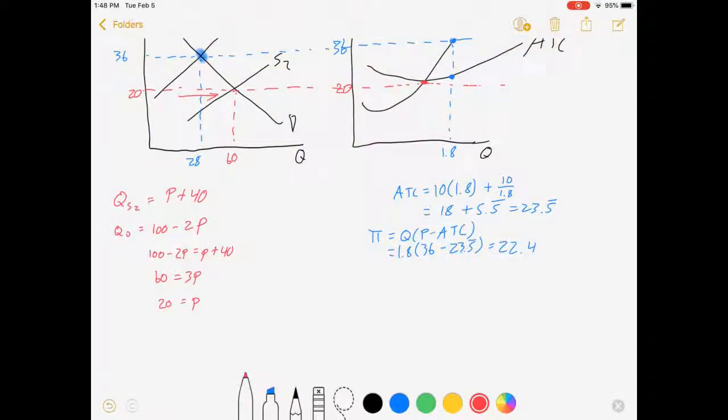How does this affect the individual firm? Well, we're still going to set marginal revenue, which now is equal to price because we're in perfect competition, equals marginal cost. 20 equals 20Q. Q equals 1.